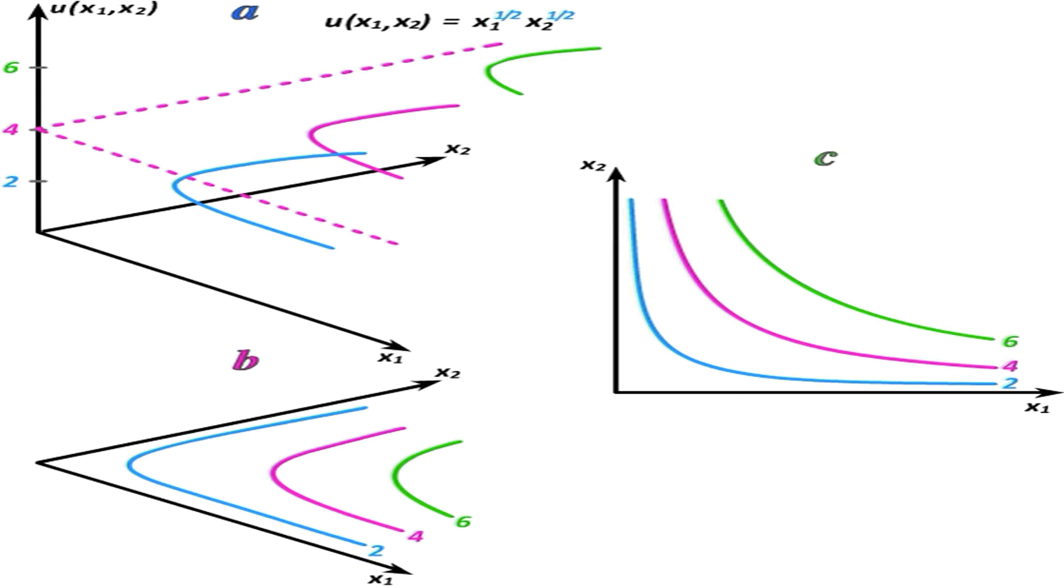Of course, that height depends on the ruler that we use to measure utility, and as we use different rulers to measure utility that number is going to change. The shapes of the indifference curves themselves, however, should be unaffected by what ruler we use to measure happiness. If two bundles make me equally happy it doesn't matter how I measure happiness, they'll still make me equally happy.